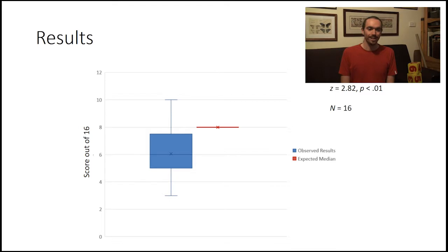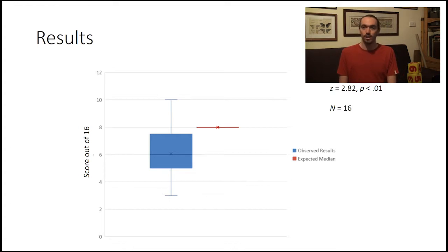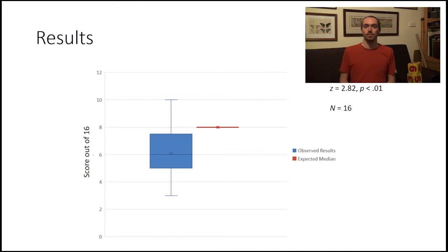Interestingly enough, participants actually did a lot worse than chance. Here in this graph, the red line is the expected median of the sample — if they were really just guessing, they'd have a 50-50 chance of getting each one right. There were 16 trials, so you'd expect them to get 8 right if guessing. But in point of fact they did a lot worse, with a median of about 6. Consistently, people answered worse than chance level, indicating they may have actively thought that the serial stimuli sounded more random than the melody actually composed by a random number generator.